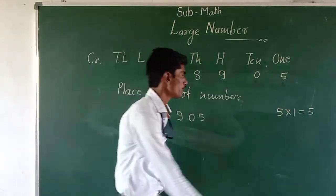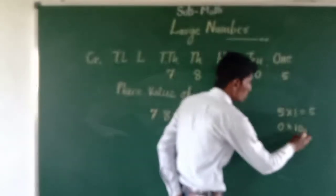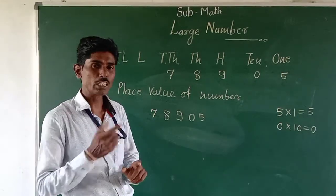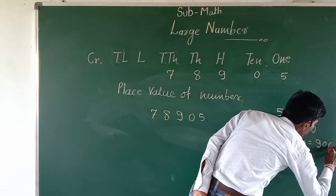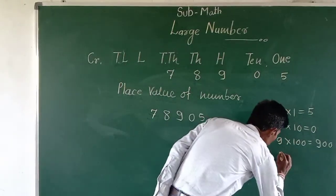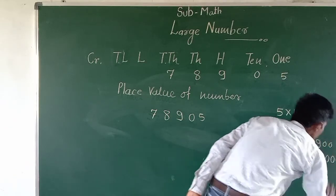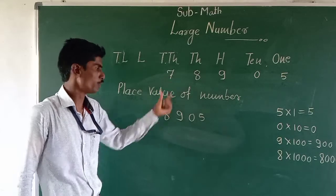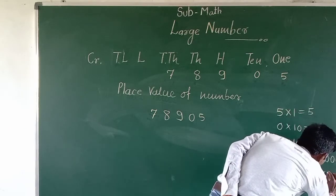What is the value of this 0? Since 0 is on the tens place, we multiply by 10, so 0 × 10 = 0. After that, this 9 is on the hundreds place, so we multiply 9 by 100: 9 × 100 = 900. After that, this 8 is on the thousands place, so we multiply 8 by 1000: 8 × 1000 = 8000. And the last one is 7, which is on the ten-thousands place, so we multiply 7 by 10,000: 7 × 10,000 = 70,000.